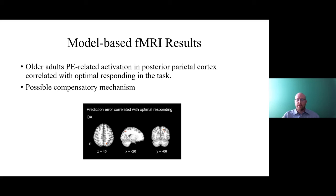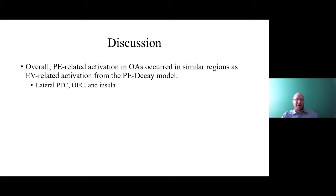Older adults also showed prediction-error-related activation that corresponded with optimal responding in the task. If a correlation between optimal responding and activation is necessary for compensation, this suggests it could be a compensatory mechanism.